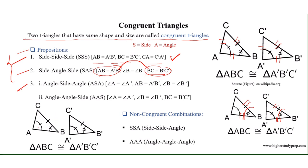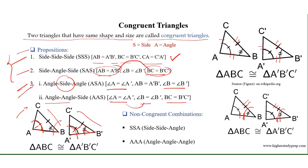If two angles are equal, for example angle A equals angle A' and angle B equals angle B', along with the included side AB equals A'B', the triangles are congruent (ASA). Similarly, if two angles are equal and a non-included side is equal, the triangles are also congruent (AAS).